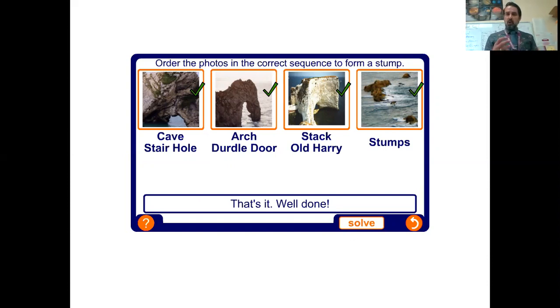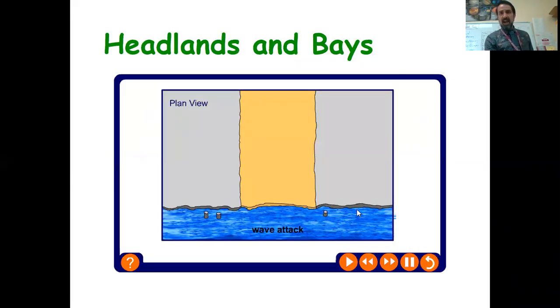Moving forward, I want to look at two other features that are formed. The first one's headlands and bays. Now if I just play here you see on the bottom the wave attack. We think which of those three strands of rock are going to be the softer rock? Well, as you see from the animation, as the wave attacks it attacks the softer rock and erodes that quicker than the